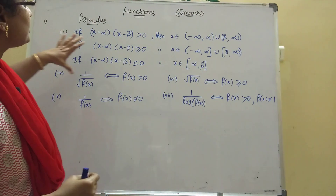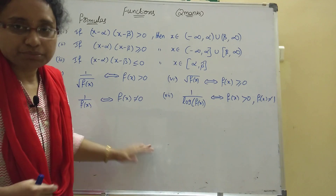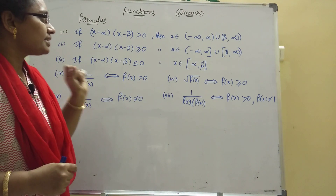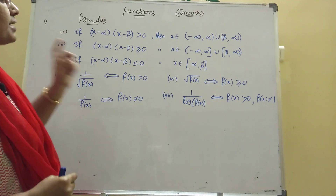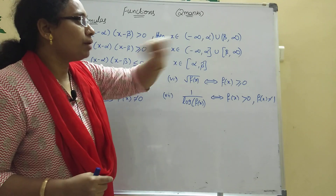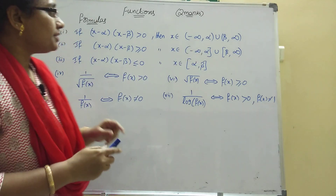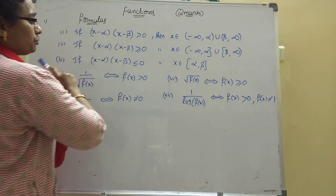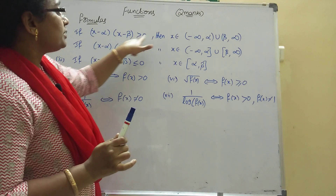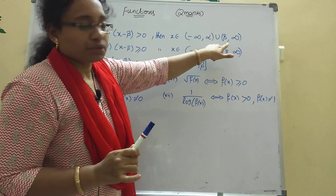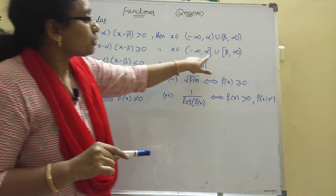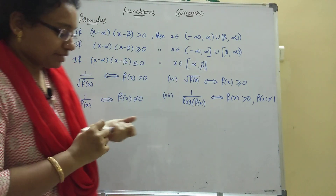These are very important formulas. The formula is: if (x - α)(x - β) is greater than zero, then x belongs to (-∞, α) ∪ (β, ∞). If it is greater than zero, open brackets will be used. If it is greater than or equal to zero, closed brackets will be used.